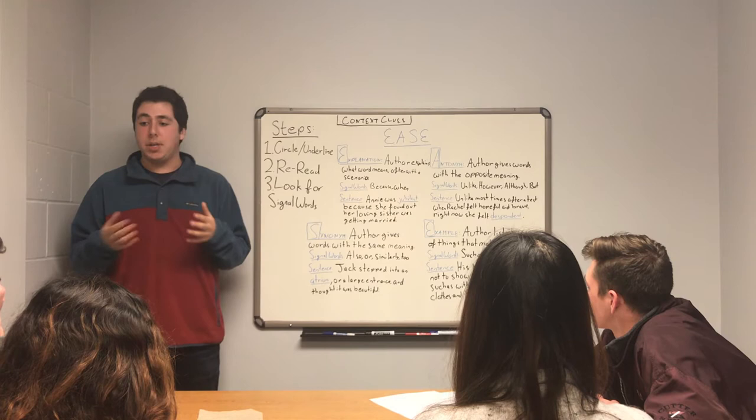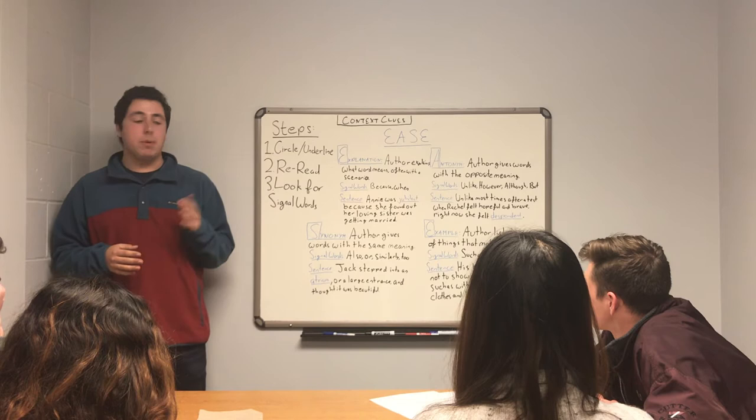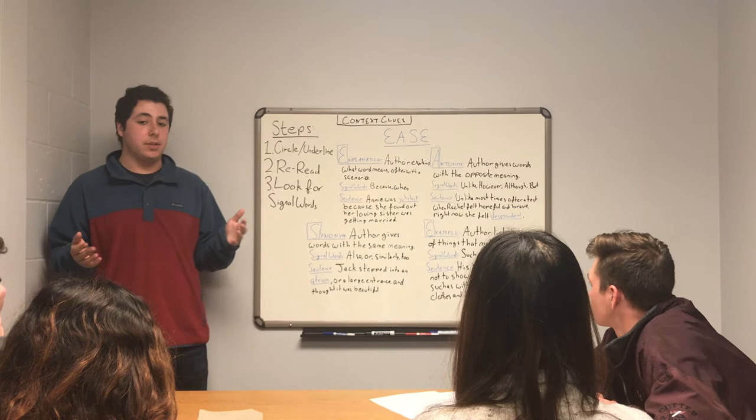Today I'm going to go over the three steps we're going to use when you find a word you don't understand, then I'm going to go into the four types of context clues, we're going to do a short example to make sure you guys understand it, and we're going to finish off with a song. Sound good?